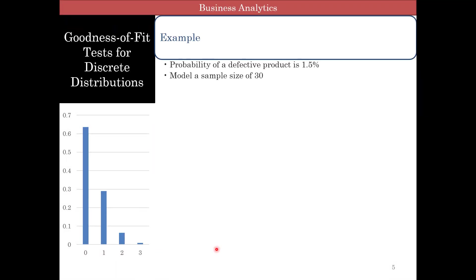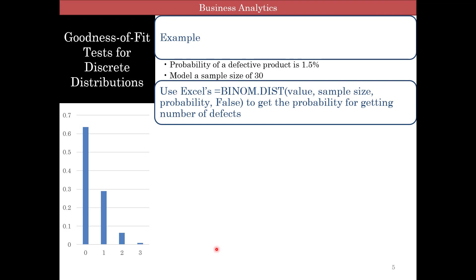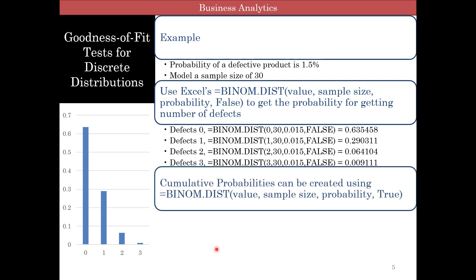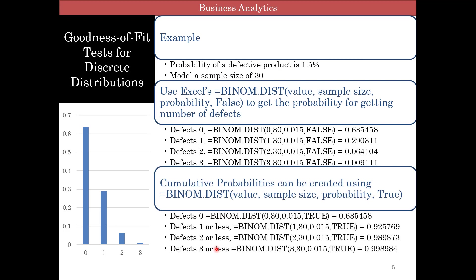Let's look at an example. The probability of a defective product is 1.5% — essentially 1.5% of the products are defective — and you are trying to model a sample of 30. We're going to use Excel and the binom.dist function. Here's the probability of getting zero defects, one defect, two defects, three defects, and so on. You can also get the cumulative probability. Let's move to Excel so we can see how to do this for binomial distribution.